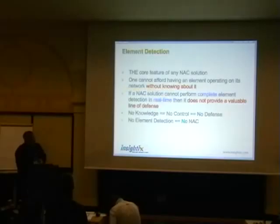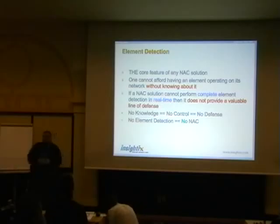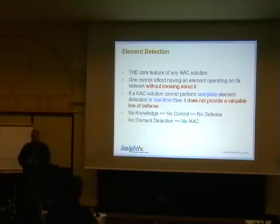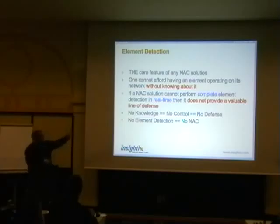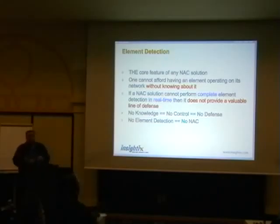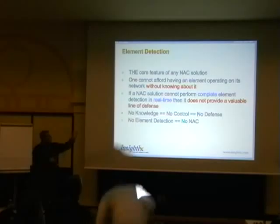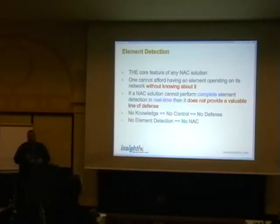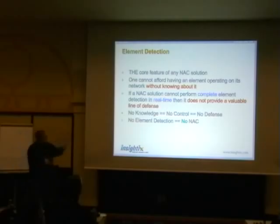One of the most important features of network access control is element detection. The idea is that NAC is triggered by element detection — if I detect a new element being attached to the network, the NAC process can start. But most solutions today simply don't understand the contextual network information. They wait for something to happen in order to detect a new device. They don't have real-time detection capabilities, and therefore if there is no knowledge about the device, there is no control and no defense.